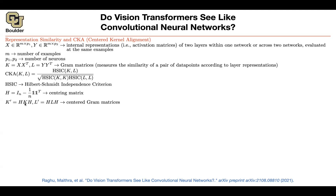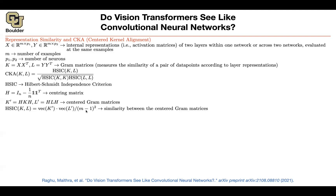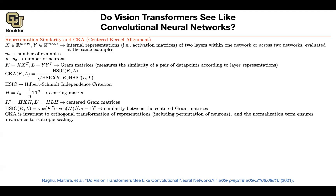You take K, multiply it from left and right by H to center it, giving you K prime. You center L the same way to get L prime. Then you vectorize — flatten — both K prime and L prime into vectors, and divide by a properly chosen scalar similar to computing variance. That gives you the similarity between the centered gram matrices, which is exactly what goes into the CKA formula.